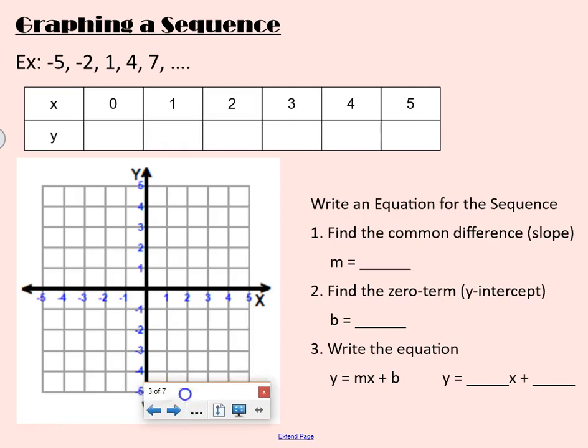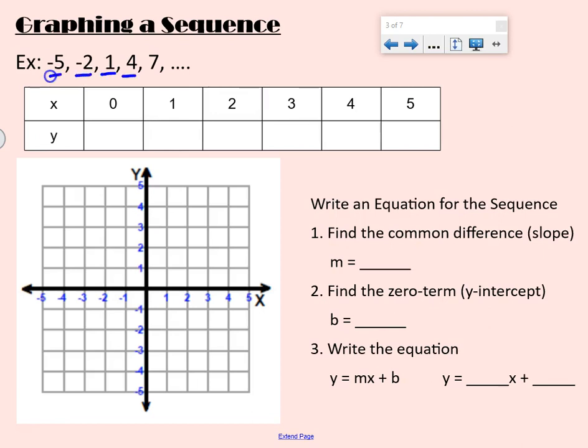So we're going to graph a sequence and see how it connects to our linear algebra. So for our example, we have this sequence: negative 5, negative 2, 1, 4, 7. It keeps going. So this would be term 1, term 2, term 3, term 4, term 5, and then so on.